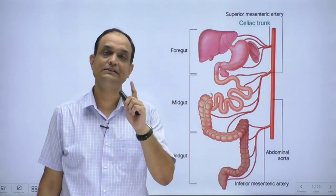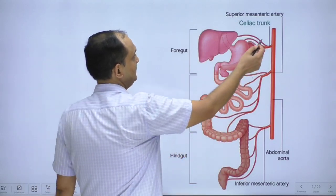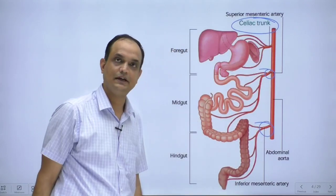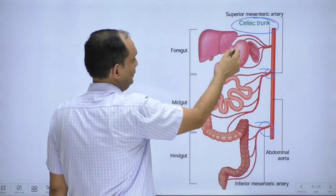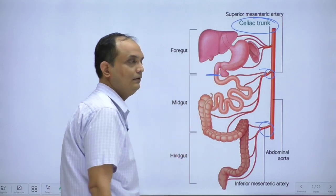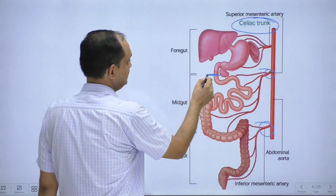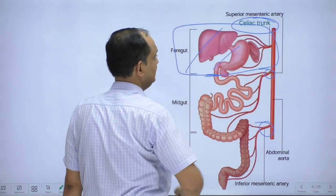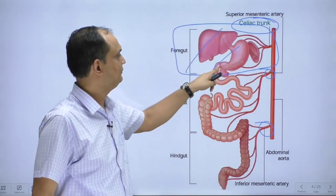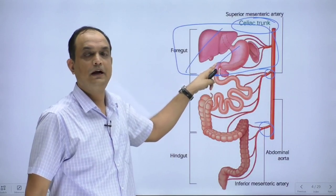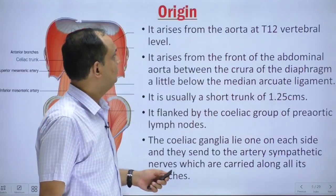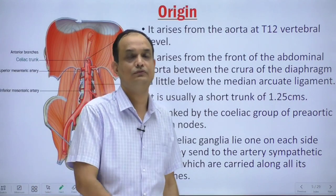In the diagram, you can see the distribution: the celiac trunk, the superior mesenteric artery, and the inferior mesenteric artery. The junction of the foregut and midgut is visible. Everything above that junction — lower esophagus, stomach, first part of duodenum, upper part of second part of duodenum, pancreas, liver, and spleen — is supplied by the celiac trunk.